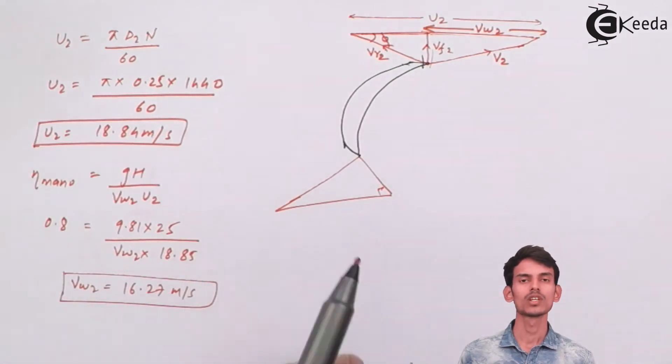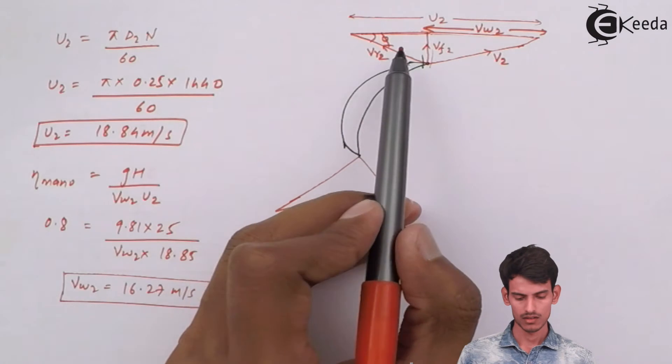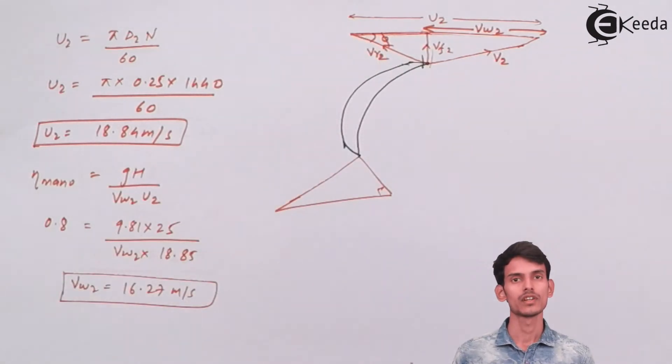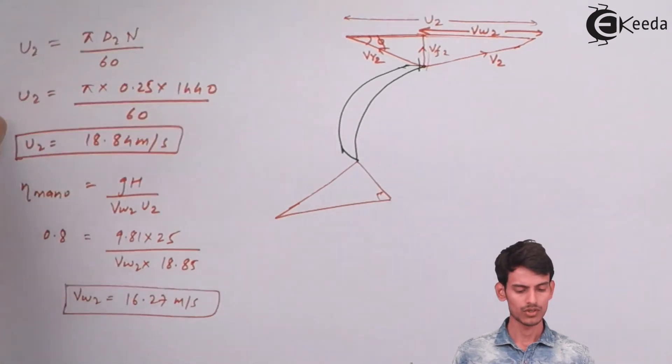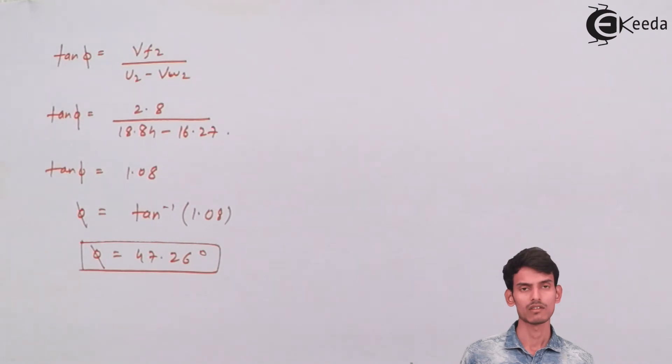u2 minus Vw2 will give you the adjacent side of tan phi. I have substituted this in the equation: tan phi equals Vf2 over (u2 minus Vw2). You get the value of phi as 47.26 degrees.